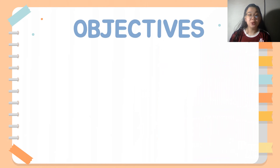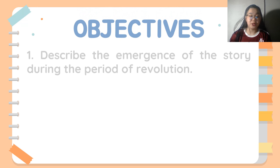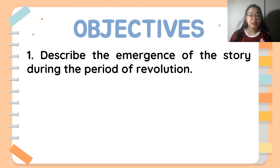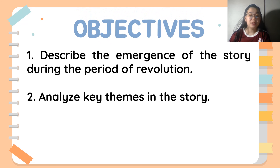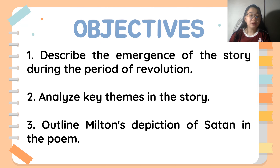To begin our lesson today, let me share with you our objectives. For the first objective: describe the emergence of the story during the period of revolution. For the second objective: analyze key themes in the story. And for the third objective: outline Milton's depiction of Satan in the poem.